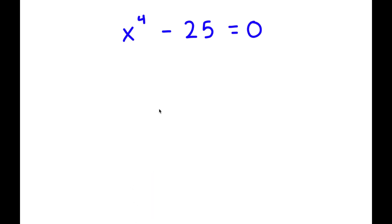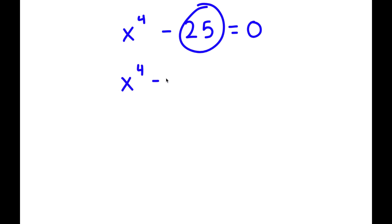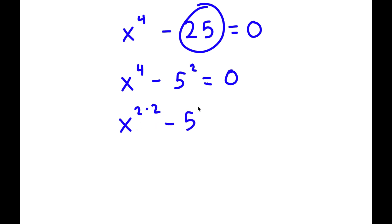In this problem I have x to the power of 4 minus 25 is equal to 0. To solve this, I'm going to first rewrite 25 as 5 squared, so now I have x to the power of 4 minus 5 squared equals 0. Now x to the power of 4 is the same thing as x to the power of 2 times 2.